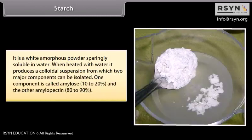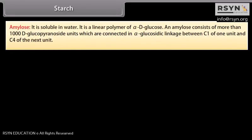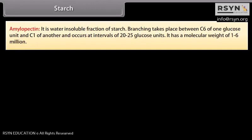Starch is a white amorphous powder, sparingly soluble in water. When heated with water, it produces a colloidal suspension from which two major components can be isolated: amylose and amylopectin. Amylose is soluble in water and is a linear polymer of alpha-D-glucose, consisting of more than 1,000 D-glucopyranose units connected by alpha-glycosidic linkage between C1 of one unit and C4 of the next. Amylopectin is the water-insoluble fraction of starch. Branching takes place between C6 of one glucose unit and C1 of another, occurring at intervals of 20 to 25 glucose units, with a molecular weight of 1 to 6 million.